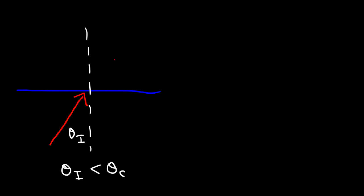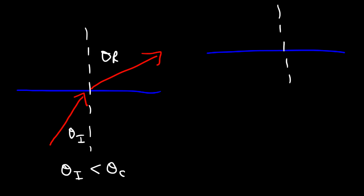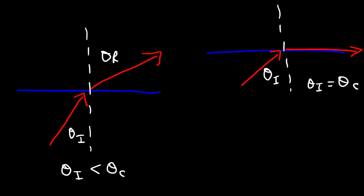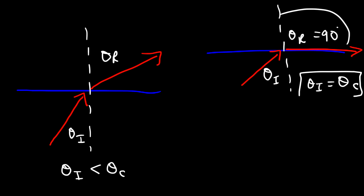This is the normal line. In the first scenario, the incident angle is small — less than the critical angle. The angle of refraction will be relatively small as well, but larger than the incident angle, so refraction will occur. In the next scenario, the incident angle is larger and equal to the critical angle. When it equals the critical angle, the refraction angle increases to 90°. So anytime the incident angle equals the critical angle, the angle of refraction is 90°.